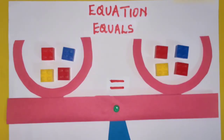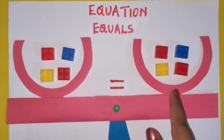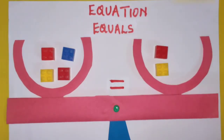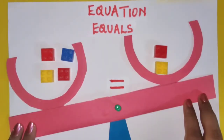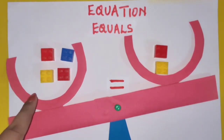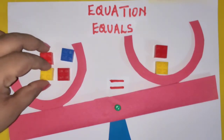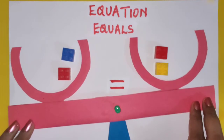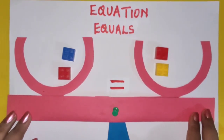Now we look at the balance scale — it is balanced because we have equal weights on both sides. If I divide this by two, four divided by two gives two, so we remove two. It gets unbalanced again. So in order to balance, I will have to divide by two on the left-hand side as well. We have two remaining here and the balance scale is balanced.